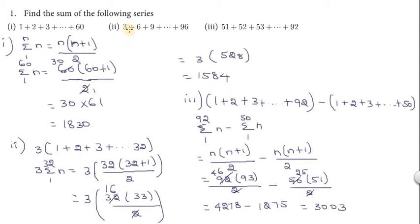Second problem: 3 plus 6 plus 9 — these are multiples of 3. Take 3 as common. The series becomes 3 into summation 1 to 32. Apply the formula: 3 into 32 into 32 plus 1 divided by 2. Cancel 2 and 32 to get 16. So 3 into 16 into 33: 16 into 33 is 528, and 3 into 528 is 1584.